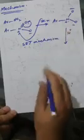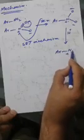Single electron transfer takes place. When a single electron is transferred to the nitrogen having a positive charge, to balance the valency, the pair of electrons moves over oxygen and oxygen gets a negative charge. Since in the reaction mixture there are plenty of hydrogen ions present, this negatively charged oxygen abruptly picks up a proton and changes into OH, giving you this intermediate.